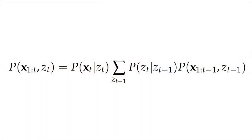We can calculate the sequence probabilities as follows: the probability of the complete sequence of observations up to T and the current state zT is the probability of observation xT given state zT, multiplied by the sum over all possible previous states of the probability of the current state given the previous state, multiplied by the probability of the sequence up to the previous time step and the previous state. This can be represented in what's known as a trellis diagram.